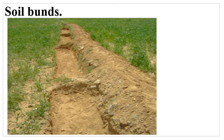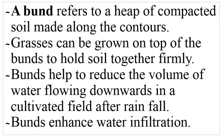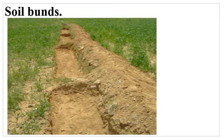The last method is soil bunds. Soil bunds refer to a heap of compacted soil — soil that is dug and placed on the lower side of the hill and compacted so that it becomes hard. Grass is also planted on top of the soil bund to make it stable and control erosion. Soil bunds help conserve soil by reducing the volume of water flowing down the slope, as water accumulates in the furrows rather than moving downhill, reducing soil erosion.